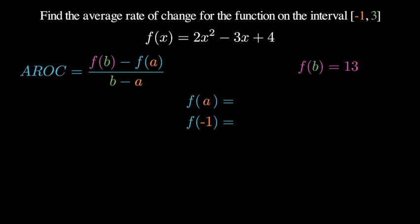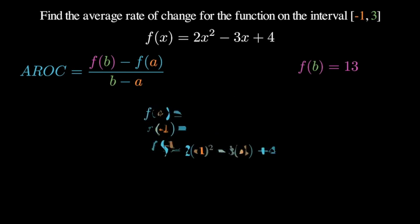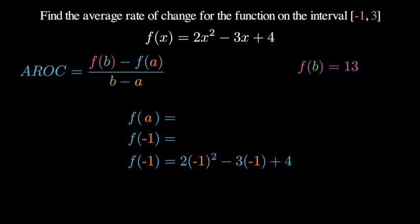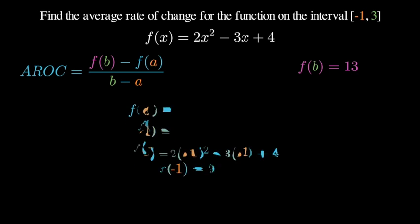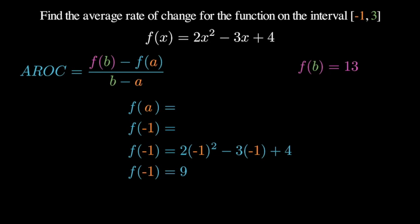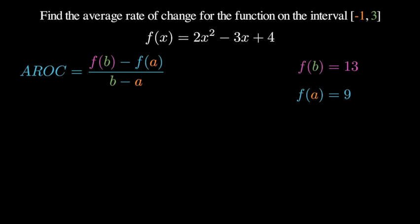So f of a is negative one. Plug negative one in for x in the f of x function. Notice the parentheses that I keep around the negative one as I do this. We then follow order of operations and we're able to determine that f of negative one just equals nine. Once again, I take this piece of information and I store it over on the right side of my screen.